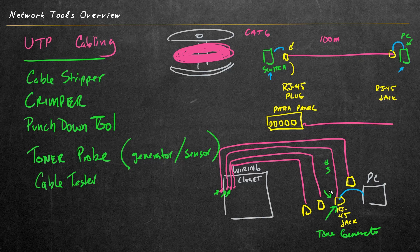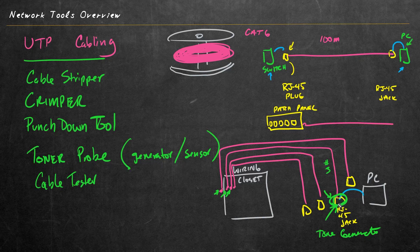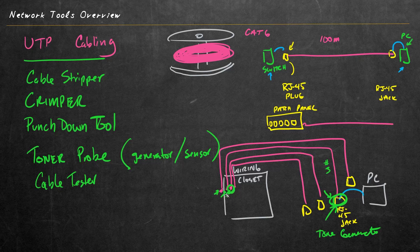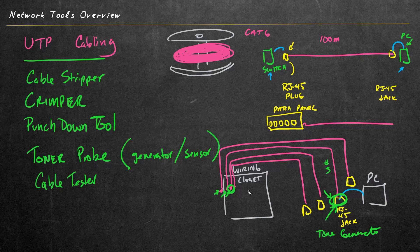And a cable tester has two parts as well. So we put one part here at the jack, and then we put the other part here in the wiring closet at the other end of that cable. And then we run the test, and then the cable tester can tell us that the pinouts are correct.